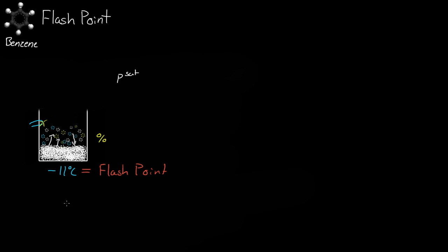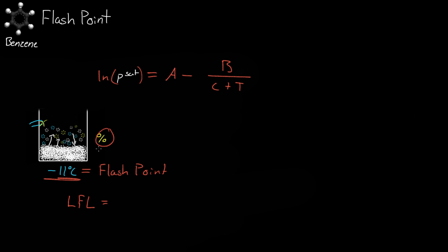Now we're also going to introduce a new term: the lower flammability limit. What I mean by that is we can find out what percent of benzene we need in the air for a fire to occur, and we can calculate that. We know the temperature, and if we remember that the log of P-sat is equal to A minus B over (C plus T), we can find the percent of benzene needed in the vapor for a fire to occur.